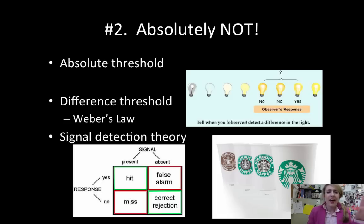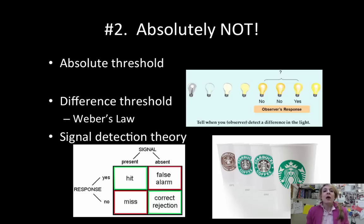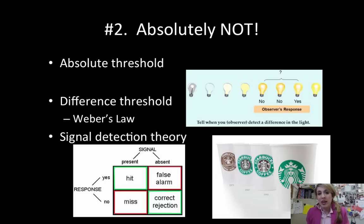Signal detection theory says there isn't such a thing as a minimum threshold where you detect something 50% of the time. What they think is that your detection of a stimulus is based on your motivation, your experience, and your fatigue. The example I like to use is the phantom vibration of the cell phone — your cell phone vibrates and you pick it up, but there's no text message. That's signal detection theory: because you were expecting a call, or because you know what the vibration feels like, you're more likely to assume there was one even when there wasn't.